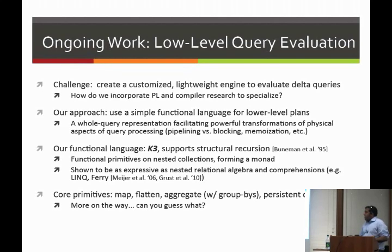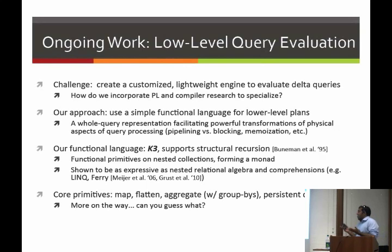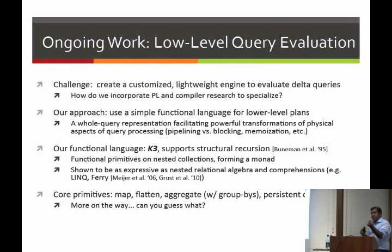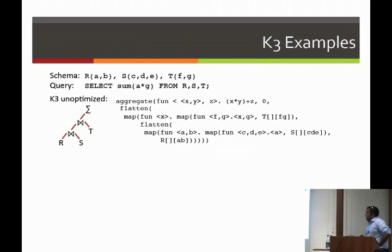The primitives we have are functional map, flatten, and aggregate. In addition, our core language has the ability to define persistent data structures. Consider a simple join aggregate query appearing on the right-hand side of our trigger programs. Working bottom up: when doing R join S, we iterate over S and create a tuple A, then for every R value we apply a map function — the join essentially becomes a map of a map. For a proper join with common variables, you'd have an equality predicate inside that says if the two are equal, produce a tuple or not.